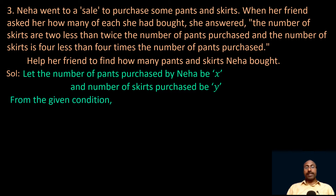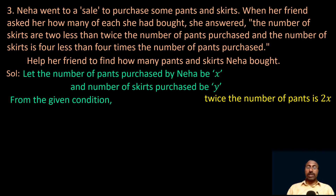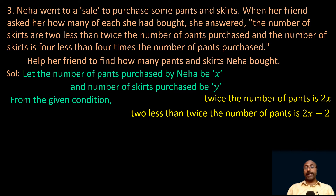From the first given condition, the number of skirts Y is 2 less than twice the number of pants. Twice the number of pants is 2X, so 2 less than 2X is 2X minus 2. Therefore the number of skirts Y equals 2X minus 2. We take this as equation 1.